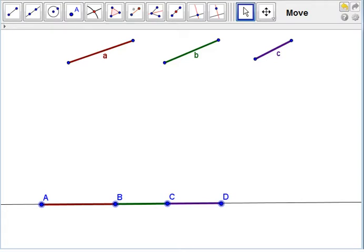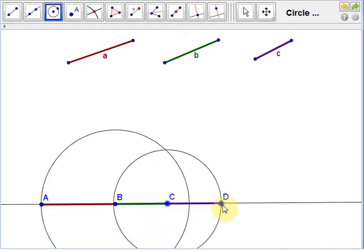Next, we'll construct two circles. The first, whose center is the point B and whose length is the length of the original given segment A. And next, we'll construct another circle whose center is the point C and whose radius is the initial given segment C.